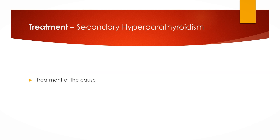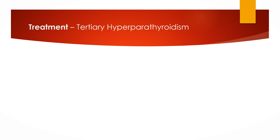Secondary hyperparathyroidism is treated by addressing the underlying cause, such as treatment of renal failure or replacement of vitamin D in cases of vitamin D deficiency. Phosphate binders in renal failure also help in prevention and treatment of secondary hyperparathyroidism. Treatment of tertiary hyperparathyroidism is surgical removal of the parathyroid glands.